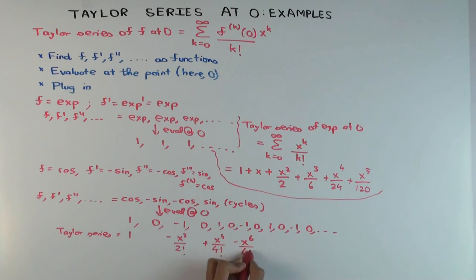Minus x^6 over 6 factorial plus x^8 over 8 factorial and so on.